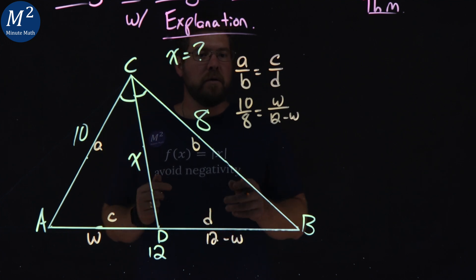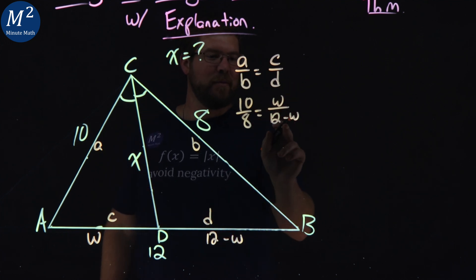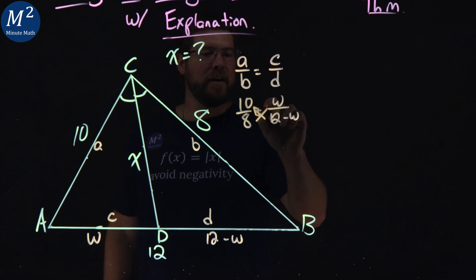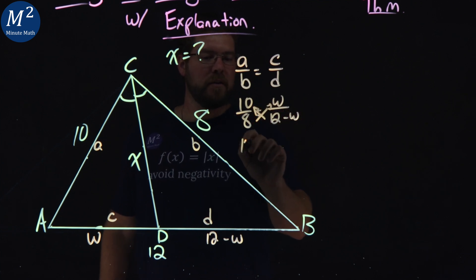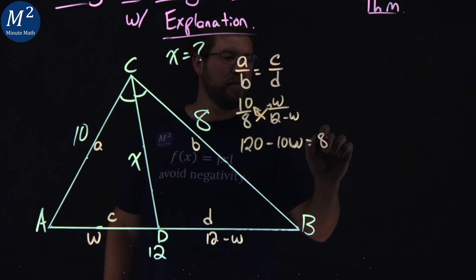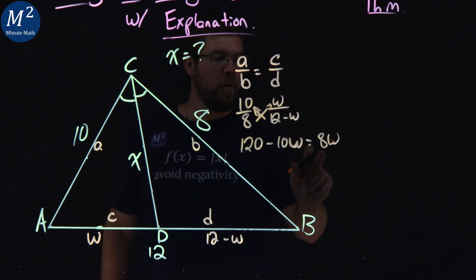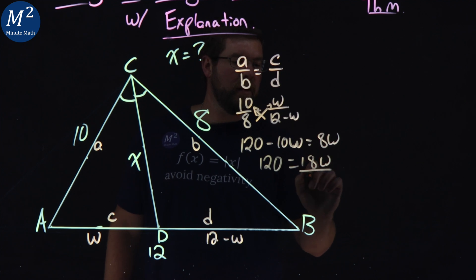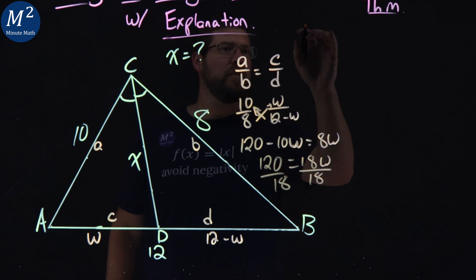So from here, let's do that. We cross multiply, and we get 120 minus 10w on the left is equal to 8w on the right. We add 10w to both sides, and we have 120 equals 18w.